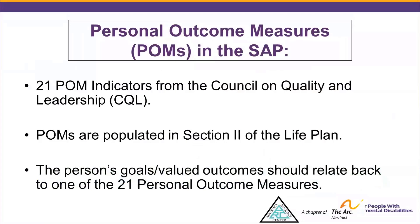Personal Outcome Measures, or POMs, are in the Staff Action Plan. These come from the 21 POM indicators from the Council on Quality and Leadership, otherwise known as CQL. POMs are populated in Section 2 of the Life Plan, and the person's Goal or Valued Outcomes should relate back to one of the 21 Personal Outcome Measures. The POMs, in conjunction with the person's Valued Outcomes or Goals, should be used as starting points for the instructions listed in the Staff Action section of the plan.